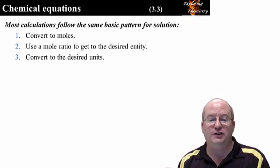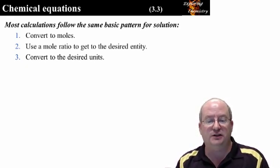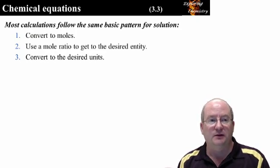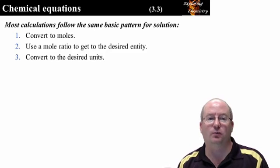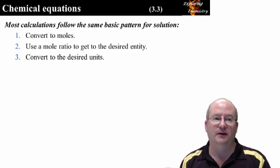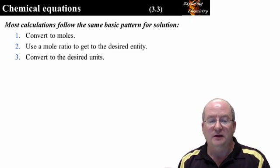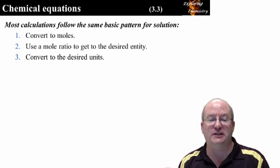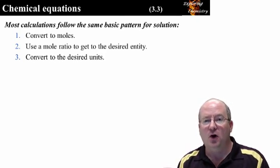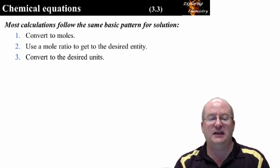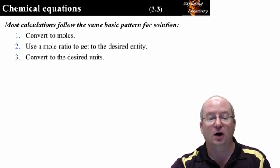Now most of the calculations you do in chemistry reduce to these three steps. First step is to convert to moles. Second step is to use a mole ratio to get to the desired entity. And the third step is to convert to the desired units. This will be obvious in the calculations we are going to do in class. But if you reflect on calculations as they become more complex, hopefully you'll see that these complex calculations also reduce to these simple steps.